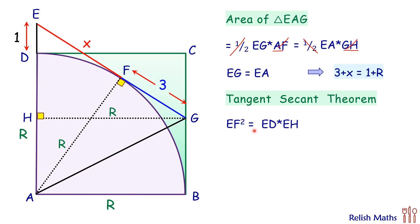So EF² is ED times EH. Here EF is x, ED is 1 centimeter, and EH is this 1 plus your diameter of the quadrant, so the diameter will become 2R. So here we'll get x² equals 1 times 1 plus 2R. So ED is 1 and EH is 1 plus 2R.